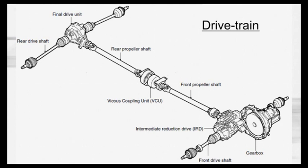This is the drivetrain of the Freelander. At the front, the engine, gearbox, and intermediate reduction drive. In the rear, the final drive, which is more commonly known as the rear differential. In the middle is the viscous coupling.